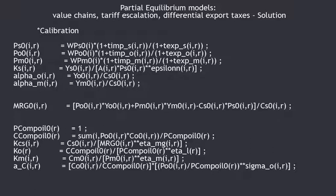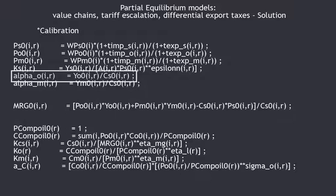Then you have the production functions of seeds, which is the relation between the production of seeds YS0, the price of seeds PS0, and other parameters or exogenous variables. From this you can calibrate the size parameter KS of seeds YS0 in a country R. You also have the LEONTIEF function, which gives you the production of oil, the initial value for the production of meal, and the initial value for the demand of seeds for crushing — so you can calibrate alpha O and alpha M.